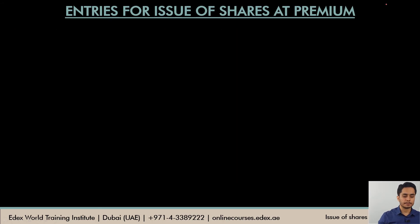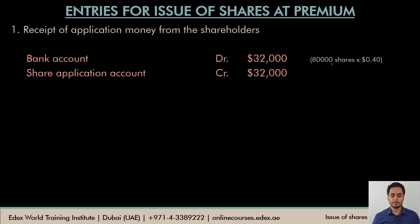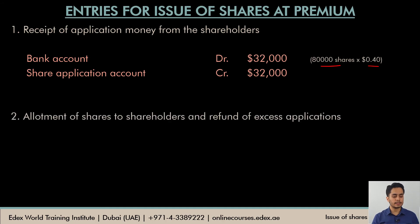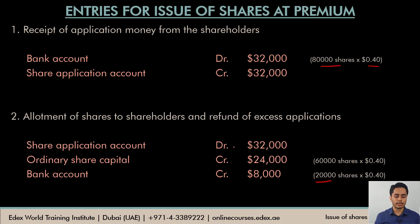Let us jump to the journal entries for Example 2. First, the company receives application money: shareholders applied for 80,000 shares at $0.4 per share, so bank account is debited $32,000 and share application account is credited $32,000. When the company allots shares, it can allot at most 60,000 shares. The balance 20,000 shares' money is refunded — bank account credited $8,000 — and the share capital is credited for the 60,000 shares allotted. The share application account of $32,000 is now debited to close it.